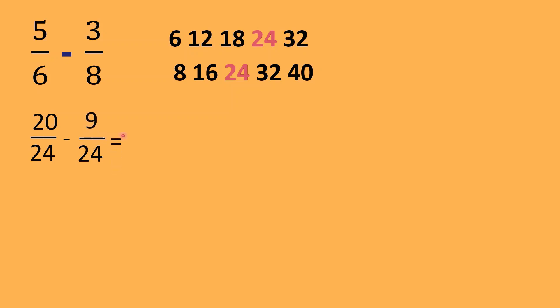So, since parehas na sila ng denominator, we can simply subtract them. 20 minus 9 is equal to 11 over, ang common denominator ay 24. May pwede ba bang pang-divide sa 11 at 24? I think wala na. Pero isipin niyo pa rin kung meron pa. Maliban sa 1, 2 pataas na pwedeng pang-divide. Wala na. So, that is our final answer. 11 over 24.